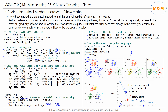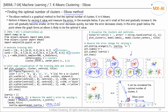When k is 3, the data is clustered into three groups. When k is 4, the data is clustered into four groups, and the error for this clustering is this much. As k increases, we can see that the error changes as follows. This is the point where the graph forms an elbow, which is likely to be the optimal k value. Therefore, it makes sense to cluster this data into three groups.